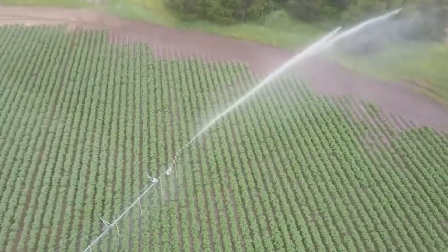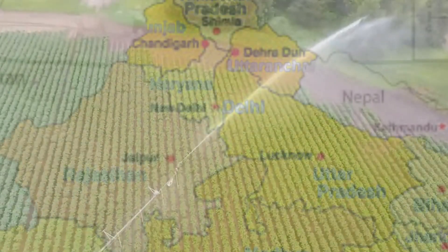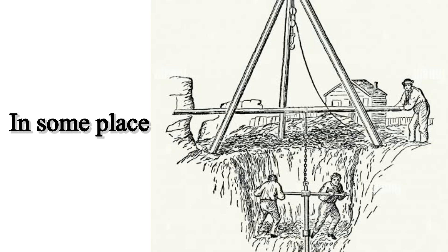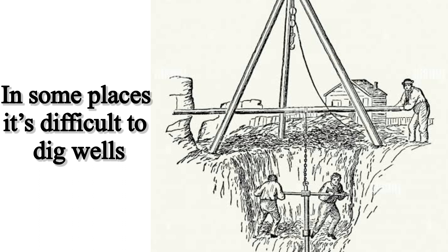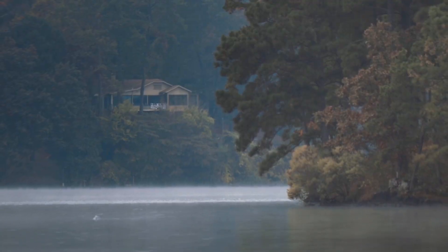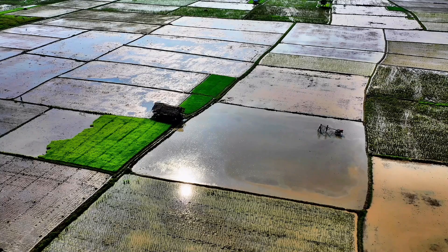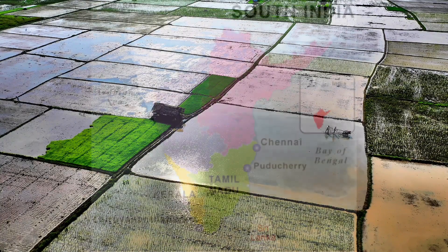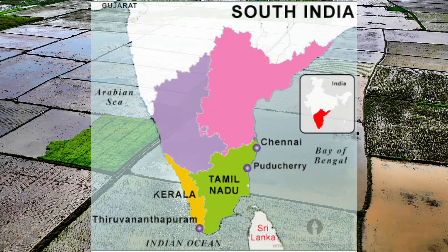Tube wells are used for irrigation in Punjab, Haryana, Uttar Pradesh and Gujarat. In some places, it is difficult to dig wells. Here, rainwater is stored in tanks and ponds and is later used for agriculture. This is most common in South India.